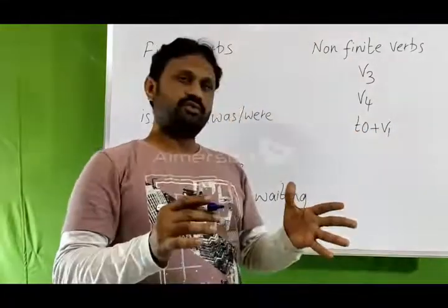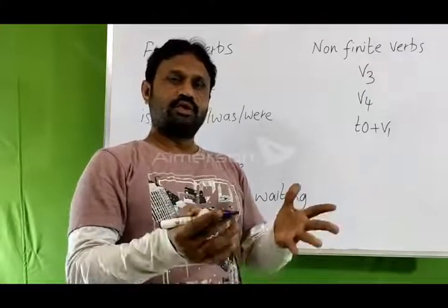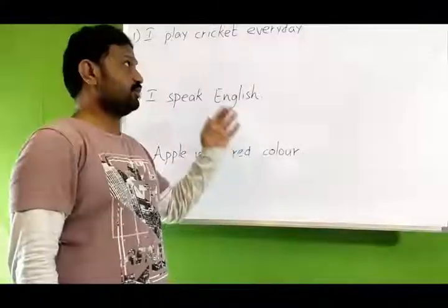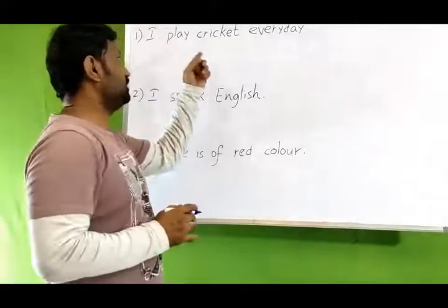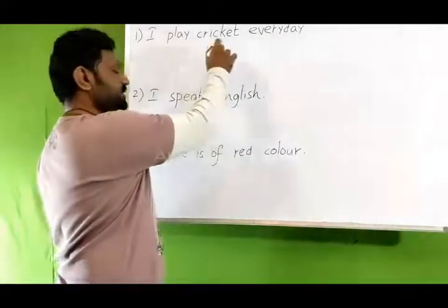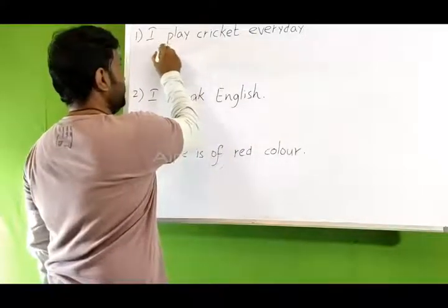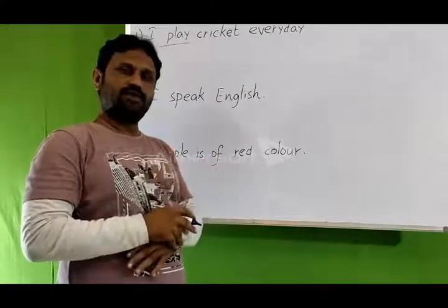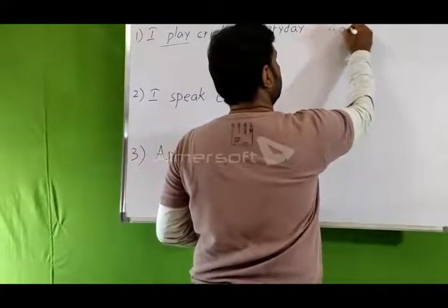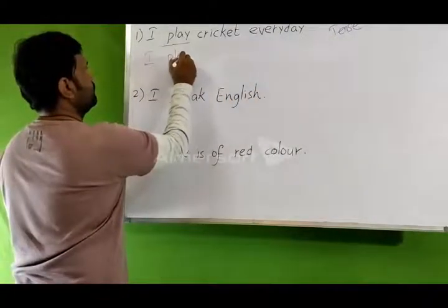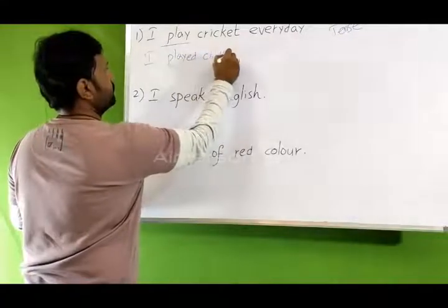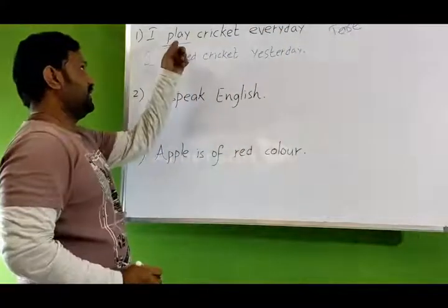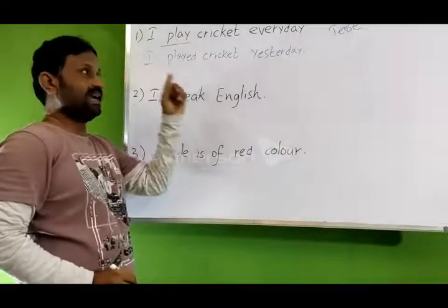Now we will practice how finite verbs change their form as per the tense, person, and number. In this board, you will find only finite verbs. Observe the first example: 'I play cricket every day.' The sentence is in present tense and the verb form is 'play.' Now observe: 'I play cricket yesterday' — the finite verb 'play' changed to 'played' as per the tense.